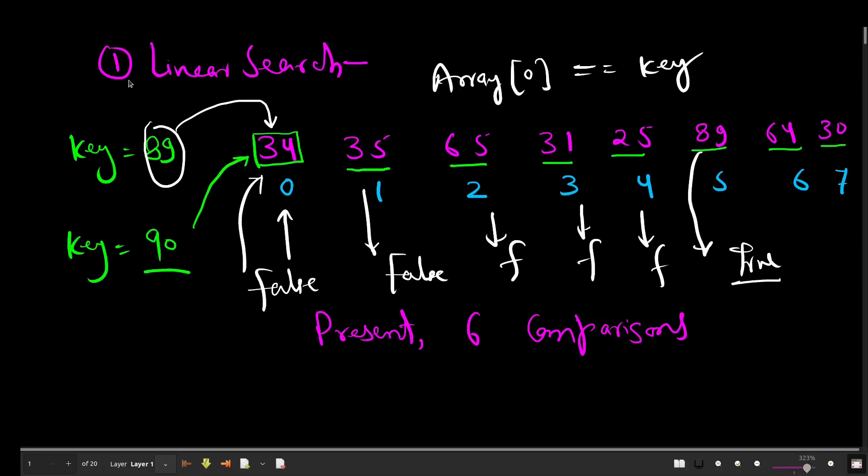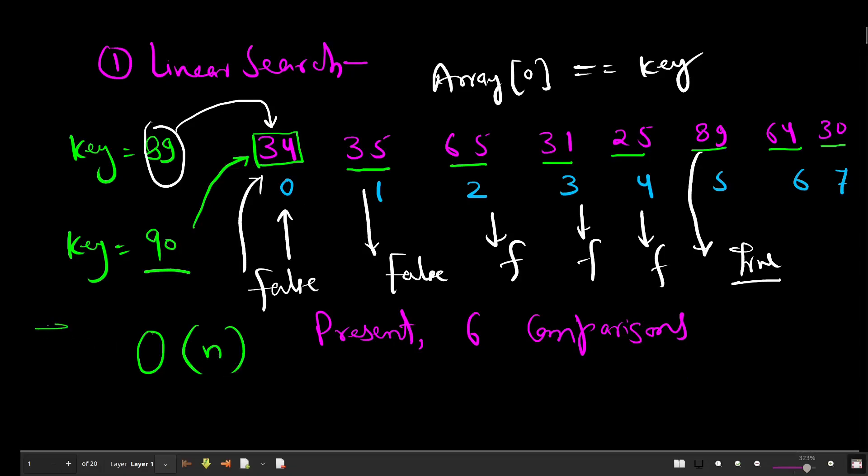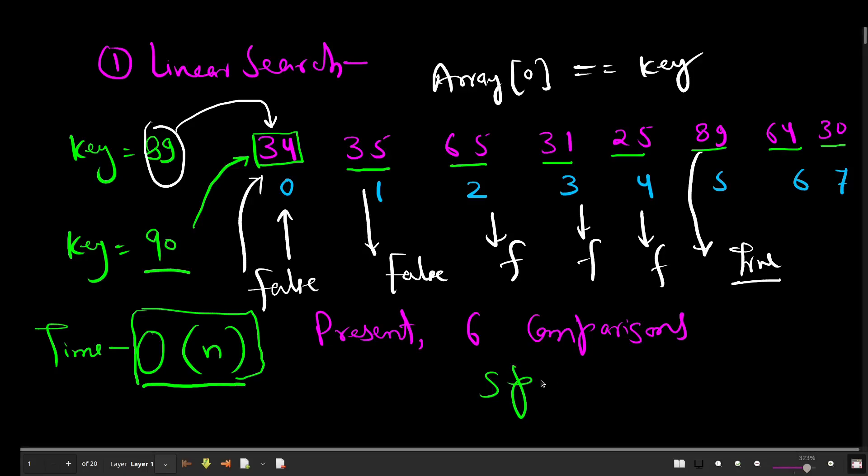This is the way linear search works. The time complexity for this algorithm is big O of n because there are maximum of n comparisons that can be made. If you ask about the best case of linear search, you can find out the element in first case only. So if key element is 34 you can find 34 in first comparison and in that case you can say best case complexity is O(1), but the worst case complexity is O(n). And this is what we always look for. If we talk about space complexity of this particular algorithm, there is no auxiliary space here, so space complexity will be O(1).